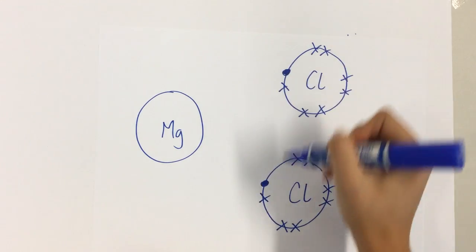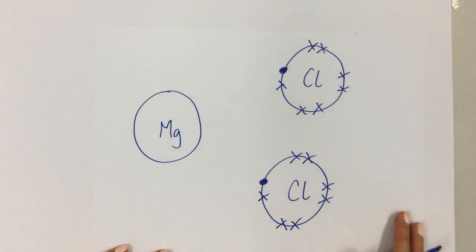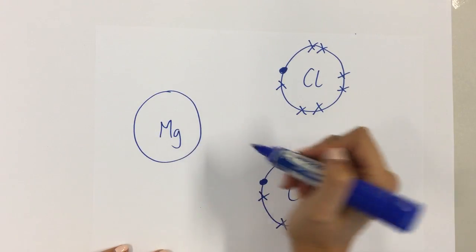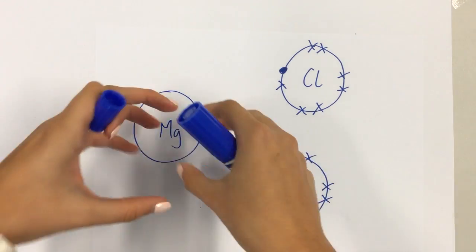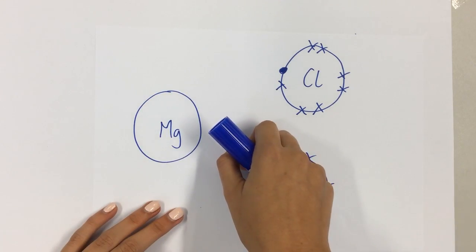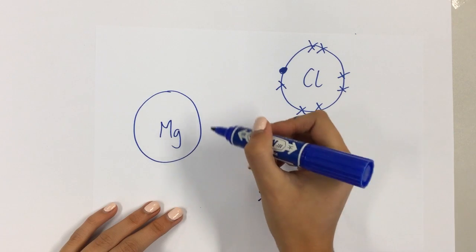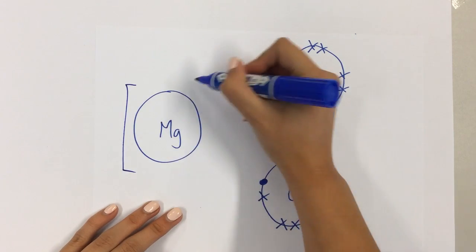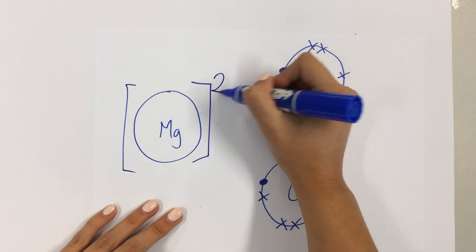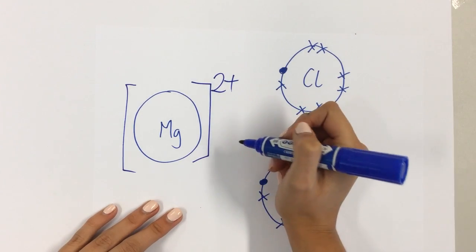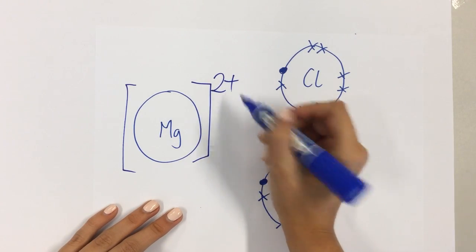Again, you can see I've drawn the dots to show that they came from the magnesium, and magnesium's now got nothing in that outer shell, which means that the one inside must be complete. Magnesium has lost two electrons, so therefore has to be 2+ in charge. It's also in group two, so group two always forms a 2+ charge.